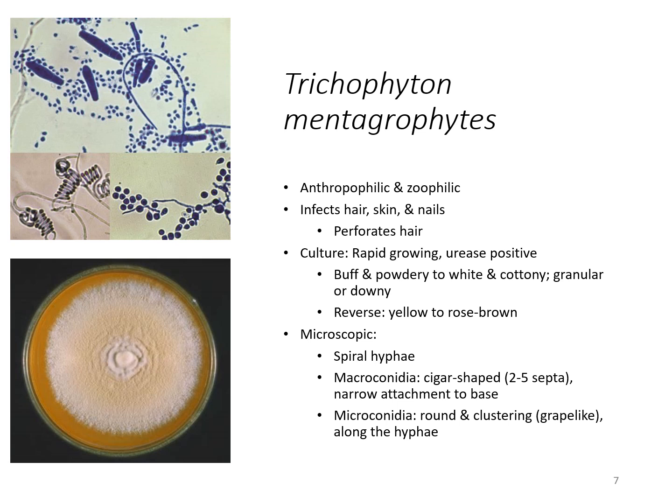Trichophyton mentagrophytes can infect you from animal to human or from human to human. It infects the hair, skin, and nails. With hair infections, you look for this particular organism to perforate the hair. This can be done by looking at it microscopically directly from the host to see if the organism has penetrated the hair, or you can do a special test inside a tube to look and see if the organism has penetrated the hair.